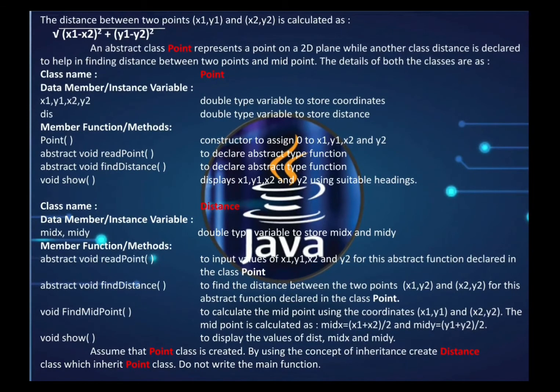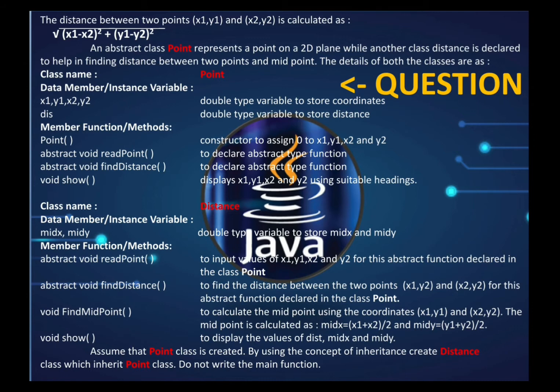Now we have a question to understand how inheritance appears in ISC board exams. In ISC, inheritance questions come for five marks and you are required to create only the derived class. I will show you both the base class and the derived class, including the main function, so you understand how everything works.